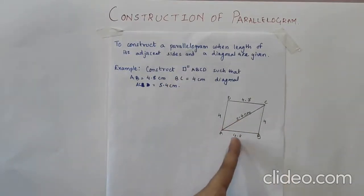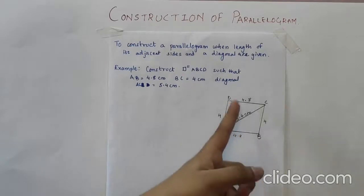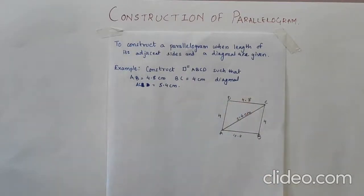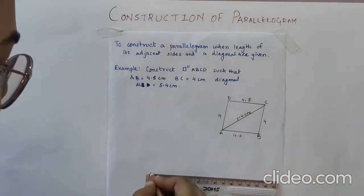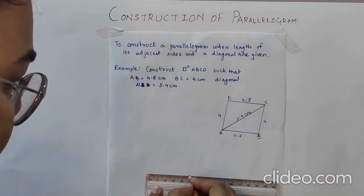You can see AB is 4.8 and since the opposite sides are equal, CD will also be 4.8. We know that BC is 4 so AD will also be 4 cm and the diagonal 5.4. So here we have the 5 elements of the parallelogram. The first step would be to draw the base, that is AB, which is 4.8 cm.